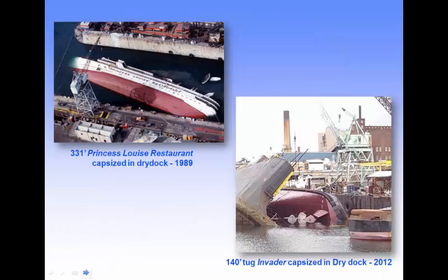You can see what happens when you don't do those calculations. The top left shows the 331-foot Princess Lewis restaurant ship which capsized in its dry dock — probably the side blocks weren't hauled in at the right time or the vessel wasn't level going up. The tug in the other image looks like a combination issue — the vessel probably fell off its side blocks and the weight of the ship pushed onto the side wall of the floating dry dock, causing it to roll over as well. These draft calculations and understanding weights are extremely important when dry docking a vessel. Please read your course reader and complete any learning activities.